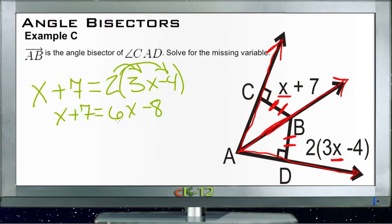Now we have more x's on this side because we have 6x over here and only 1x on the left side. So let's move the x's to the right-hand side. We'll subtract x over here and that'll cancel. And subtract x over here, and that'll be 7 equal to 5x. 6x minus 1x is 5x minus 8.